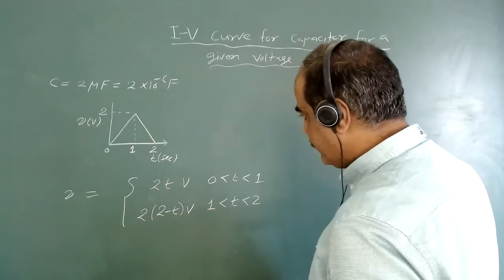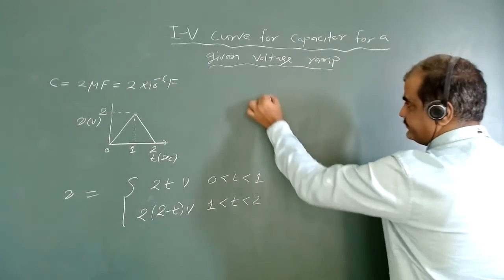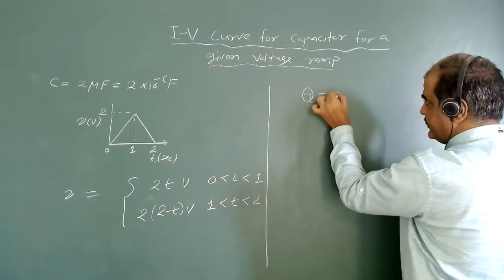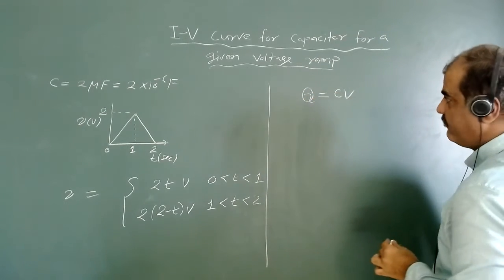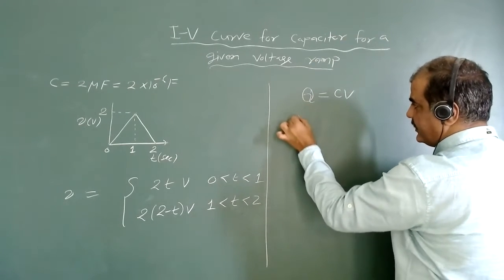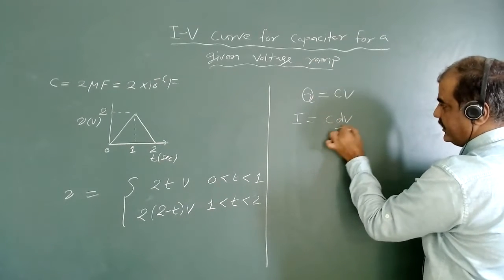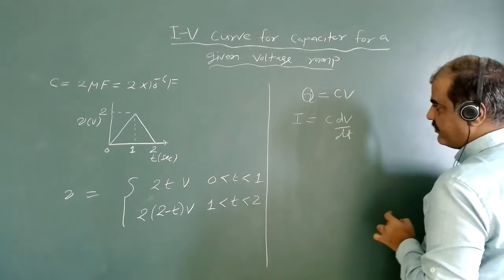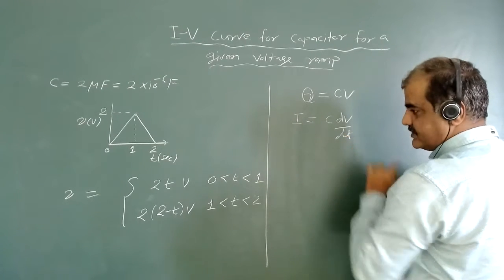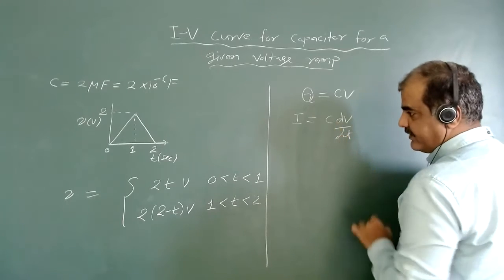Now I want to calculate the IV curve. We know for any capacitor the equation q equals CV is valid. If I want to measure the current, it is given by i equals C times dv/dt. So to measure the current in the capacitor I need to know the scan rate, which is dv/dt.